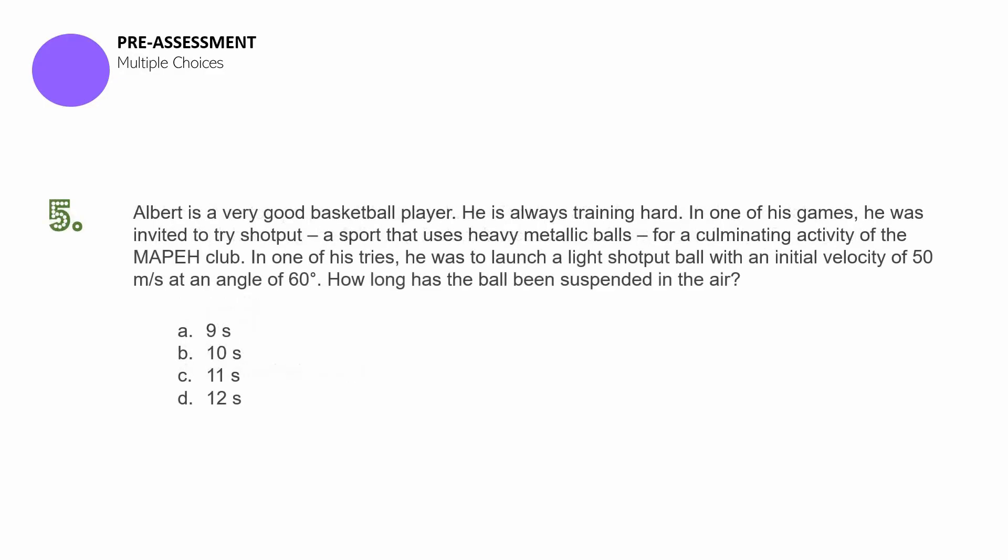Question number five. Albert is a very good basketball player. He is always training hard. In one of his games, he was invited to try shot put, a sport that uses heavy metallic balls, for a culminating activity of the MAPEH club. In one of his tries, he was to launch a light shot put ball with an initial velocity of 50 meters per second at an angle of 60 degrees. How long has the ball been suspended in the air? A. 9 seconds. B. 10 seconds. C. 11 seconds. D. 12 seconds.